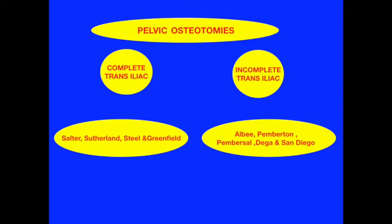Pelvic osteotomy is divided into complete transiliac and incomplete transiliac. The complete transiliac includes Salter, Sutherland, Steele, and Greenfield. The incomplete includes Elby, Pemberton, Dega, and San Diego, depending on the penetration of the outer table only or both tables.